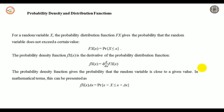The probability distribution function F(x) gives the probability that a random variable does not exceed a certain value: F(x) = Pr[X ≤ x]. The probability density function f(x) is the derivative of the distribution function: f(x) = d/dx F(x). The probability density function gives the probability that the random variable is close to the given value, expressed as f(x)·Δx = Pr[x < X ≤ x + Δx]. These relations define the probability density and distribution functions.